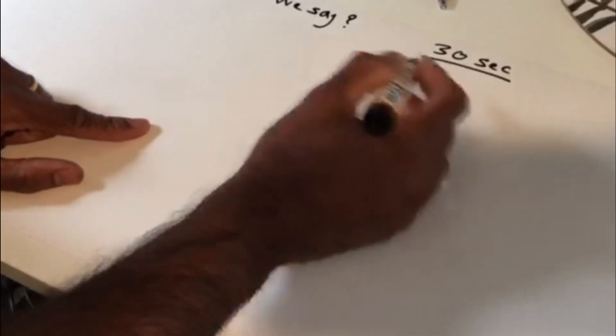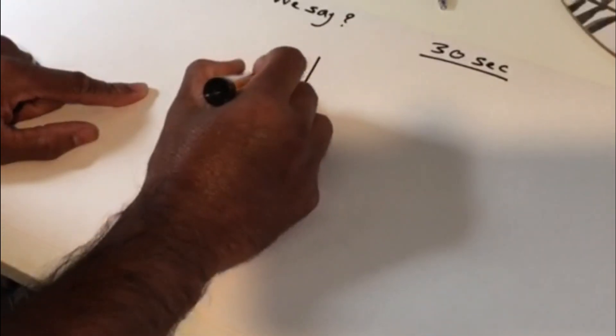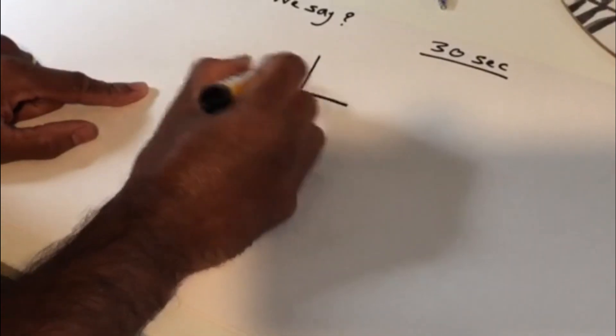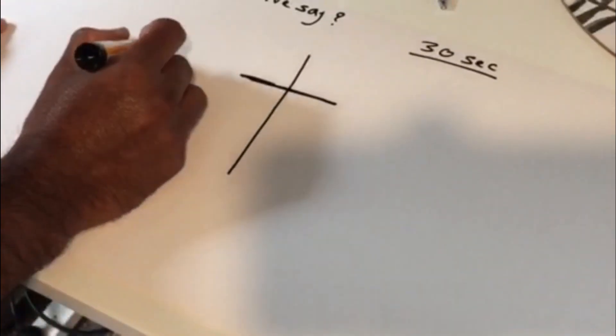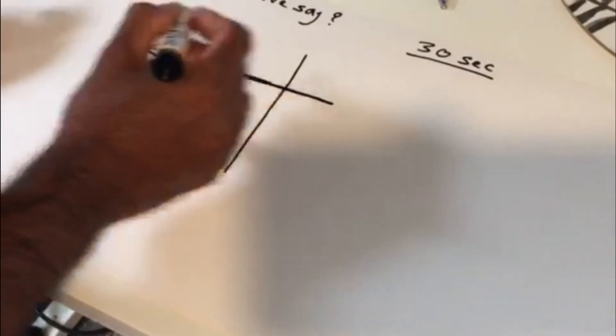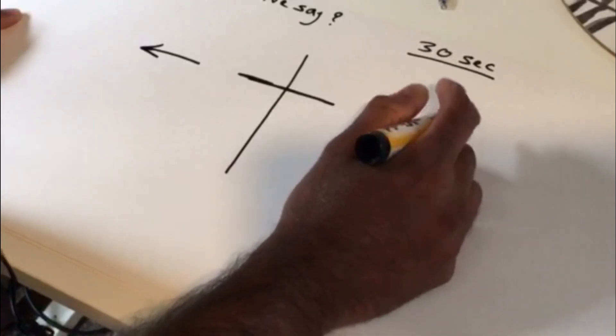So what I want you to do is get a sheet of paper, piece of paper like that and then draw a cross in the middle. Doesn't have to be perfect.